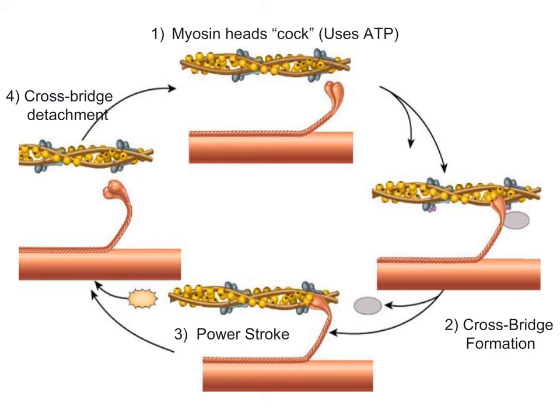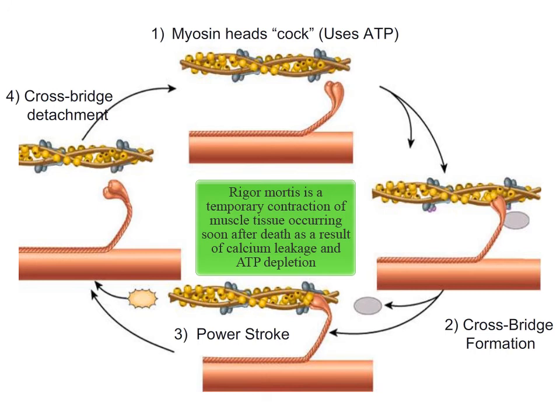When people or other mammals die, the sarcoplasmic reticulum becomes leaky — all the calcium leaks out, which starts muscle contraction. Because the individual is dead, all the muscle contraction quickly uses up all the ATP in the cell. Once the ATP is used up, those contracting muscles cannot relax, causing something we call rigor mortis. Rigor mortis is the temporary stiffening of the muscles that happens soon after death, a result of the leaky calcium causing contraction but then using up all the ATP.